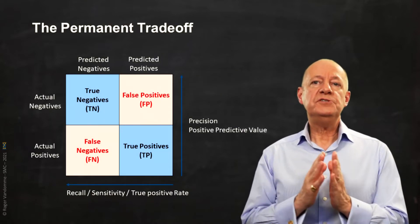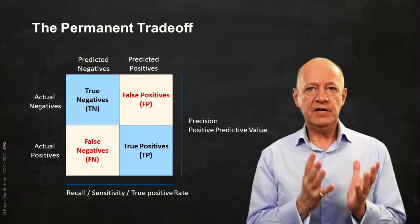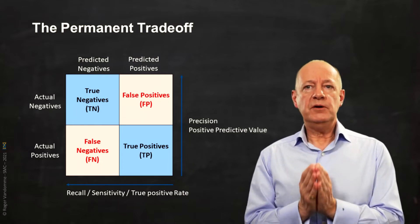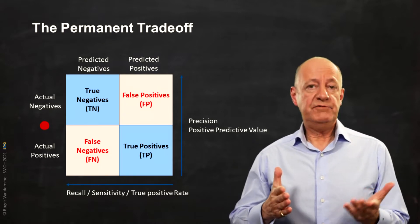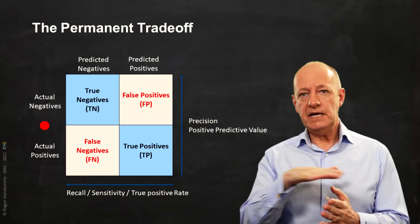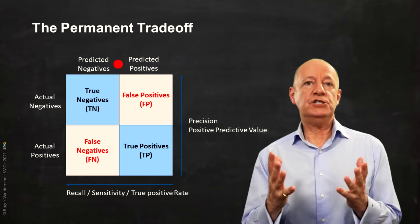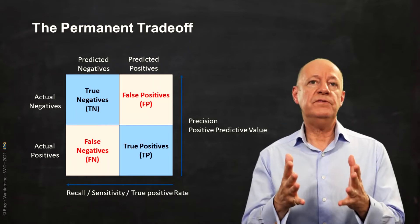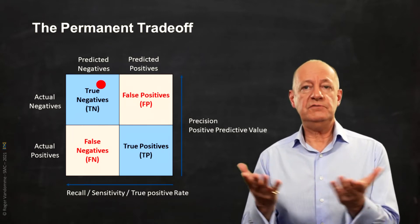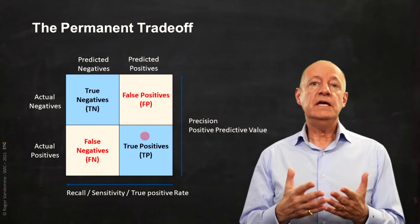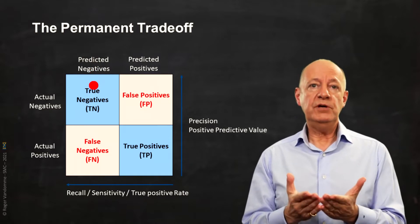Here we see what is called a confusion matrix, which is the expression of the results of a classification model by comparing predictions and truth. In ordinate, we have the observed truth — the reality — and in abscissa, we have the prediction of the model. Ideally, the prediction of our model will be in line with the reality. If the reality is positive and the prediction of our model is positive, we have a true positive. If the reality is negative and the prediction of our model is negative, we have a true negative.